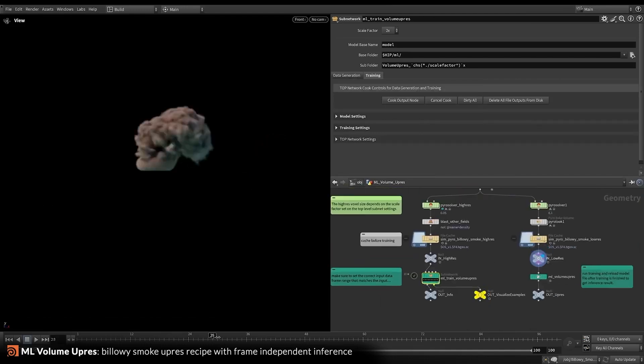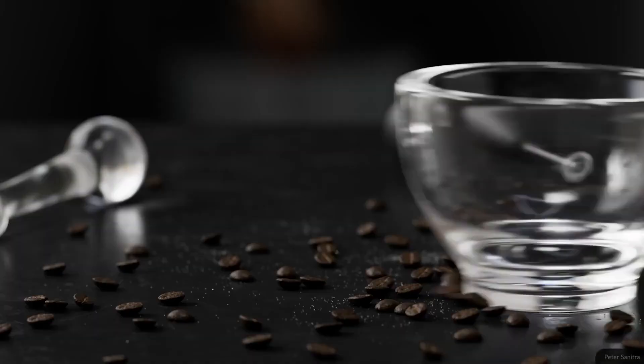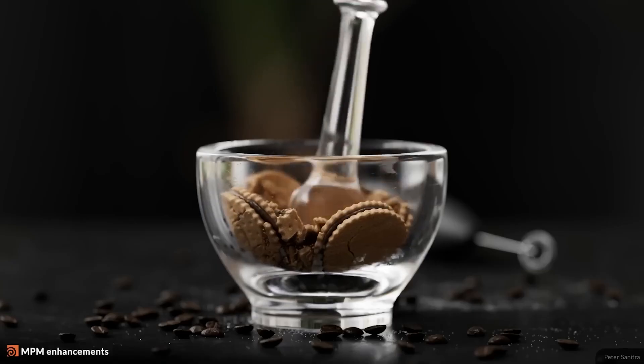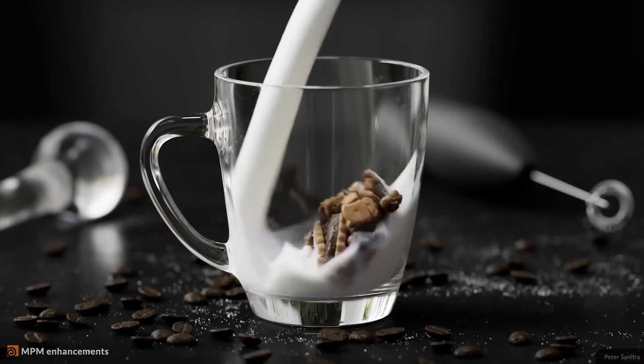Houdini 21 also introduces quality of life features like recipe subnets and a new ability to toggle simulations on and off, and you can do that live in the viewport. So you as an artist can quickly preview scenes without heavy playback slowdowns.